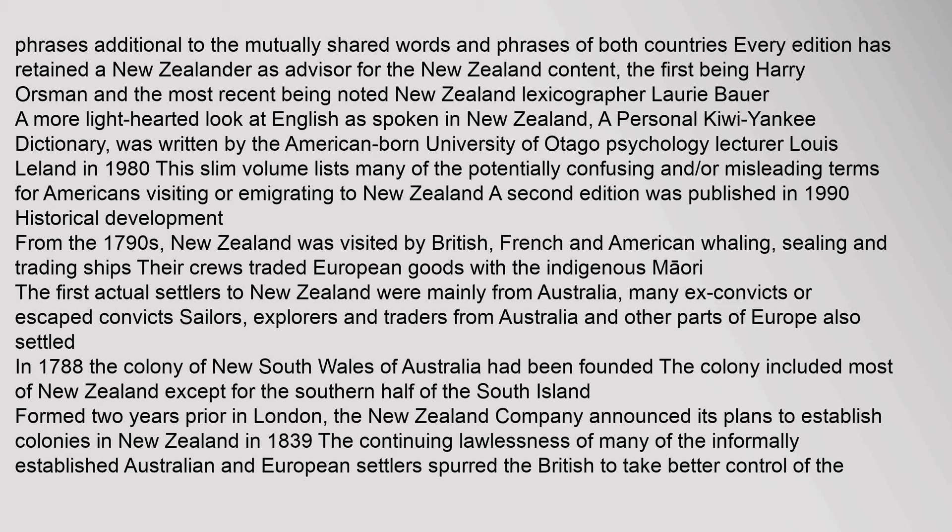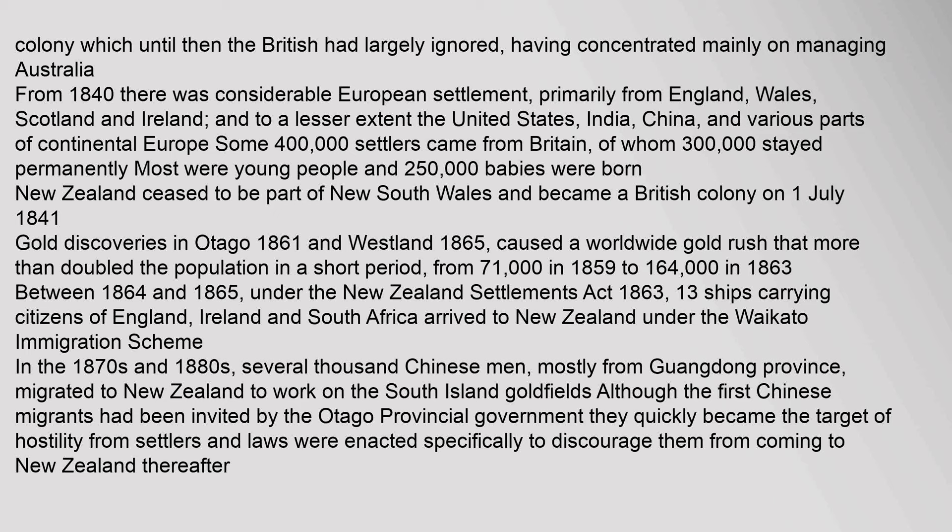From the 1790s, New Zealand was visited by British, French and American whaling, sealing and trading ships, whose crews traded European goods with the indigenous Māori. The first actual settlers to New Zealand were mainly from Australia, many ex-convicts or escaped convicts. Sailors, explorers and traders from Australia and other parts of Europe also settled. In 1788 the colony of New South Wales was founded, which included most of New Zealand except the southern half of the South Island. Formed two years prior in London, the New Zealand Company announced its plans to establish colonies in New Zealand. In 1839, the continuing lawlessness of informally established settlers spurred the British to take better control of the colony.